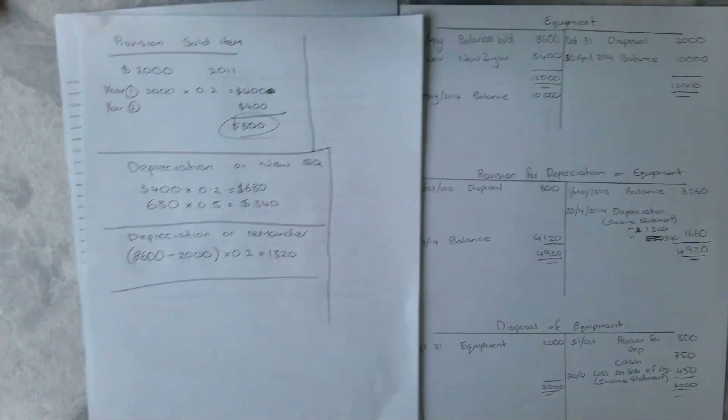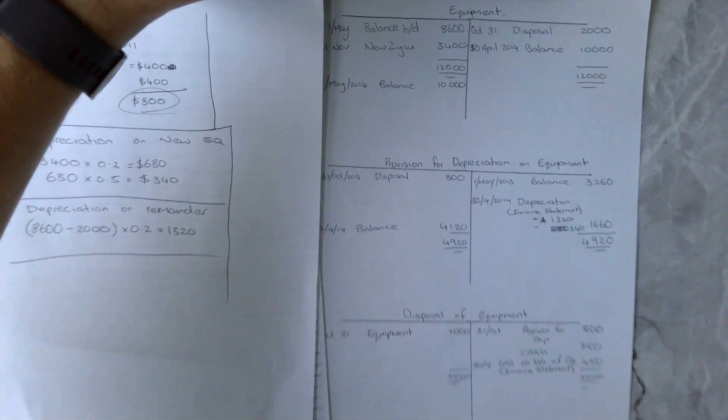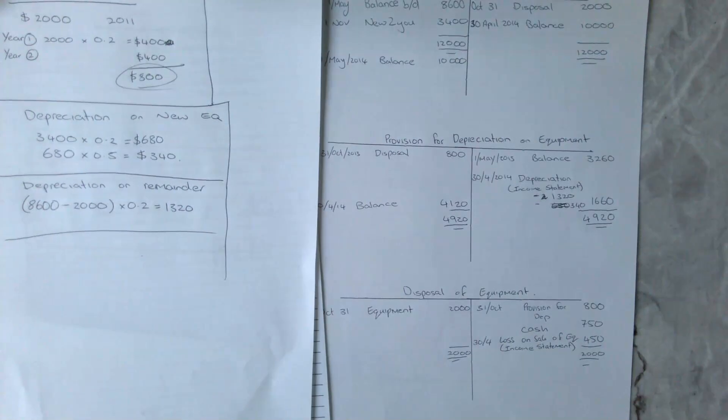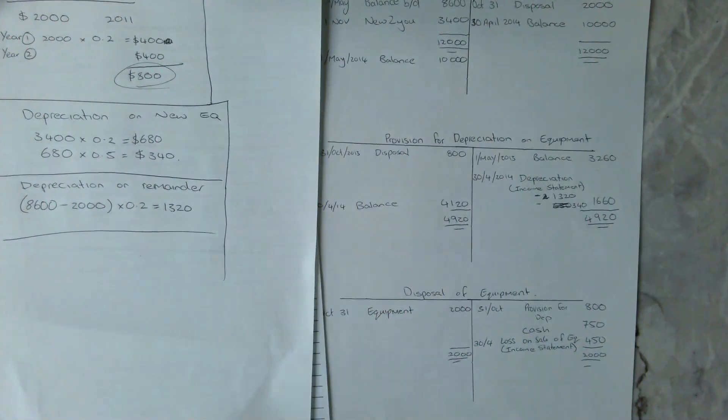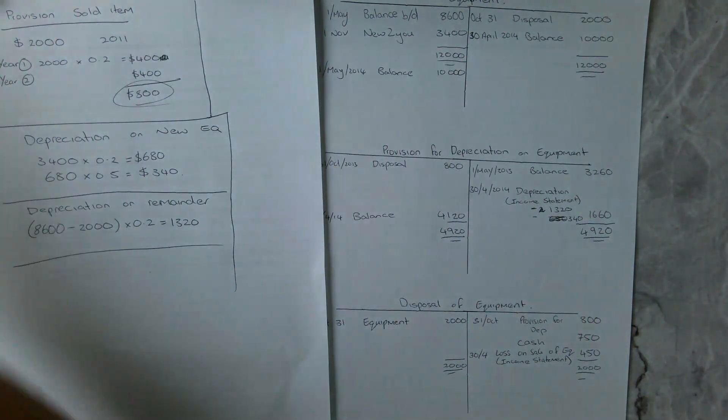And so that is how you do a full question on disposals. I'll just move that down so you can slightly see that bottom bit. But that is start to finish how you do that question from Tony Yao. Hope you enjoyed that one. See you next time.